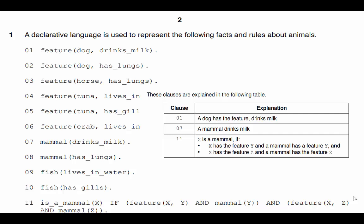Here we see that first question. A declarative language is used to represent the following facts and rules about animals. They give us several examples here, and they give us a little table to show how it's read. For example, a dog has the feature drinks milk. Dog has the feature that it has lungs. Tuna has the feature that it has gills, and so on. You want to be familiar with this as possible to make it as easy and as less stressful as possible.